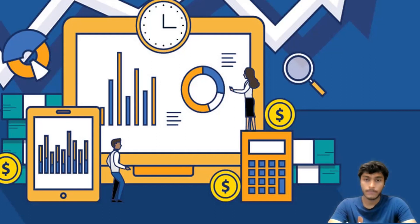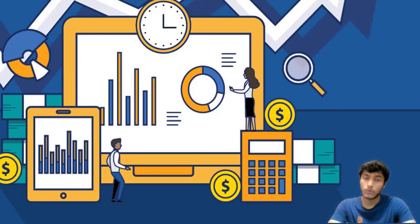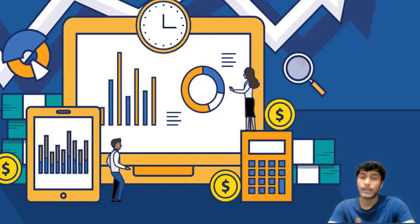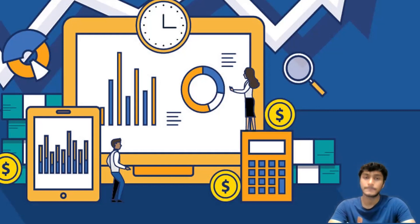Coming to the second example, which is break-even analysis. The break-even point is where total revenue meets total cost. Do we need to include variable cost in the total cost? Do we need to include fixed cost in the total cost? Managerial accounting helps take such decisions — what are the different break-even points for different kinds of products and services.